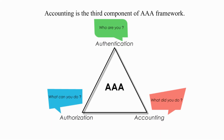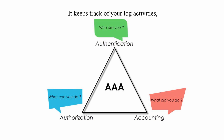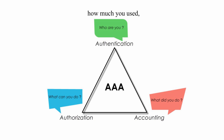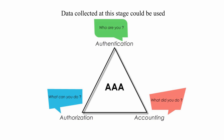Accounting is the third component of AAA framework. It keeps track of your log activities, which may include what resources you used, how much you used, how long you used, and so on. Data collected at this stage could be used for controlling, monitoring, billing, statistics, and so on.